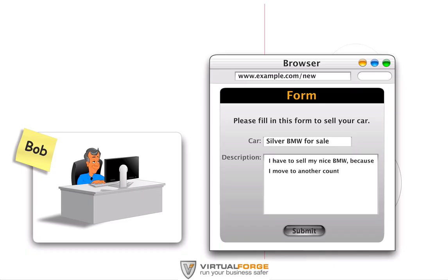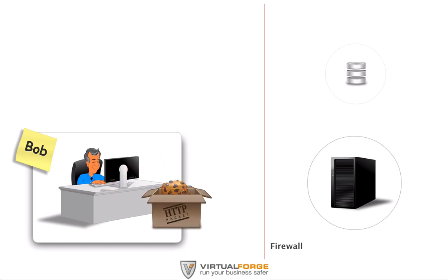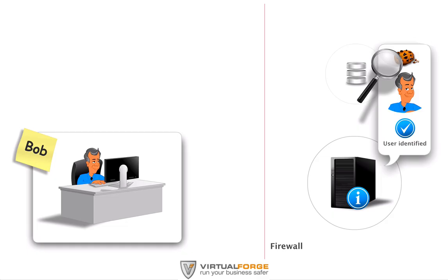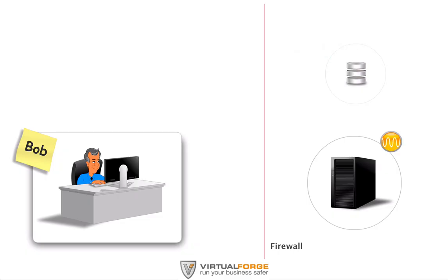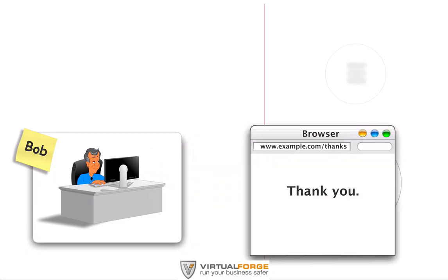Please note that Bob is logged on to the system, and his session identifier is stored in a so-called cookie. This cookie is sent along with every request in order to maintain the session and keep Bob or any other user authenticated. The server receives Bob's ad and stores it in the database, along with the other ads. Bob receives a notification that his ad was processed successfully.